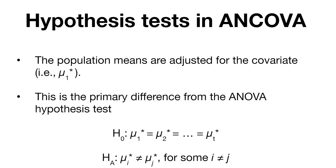The null hypothesis is that all of our adjusted means are equal across all treatment levels, and the alternative is that at least one of them is different for some value i not equal to j. This is how we write out the hypothesis tests for the analysis of covariance.